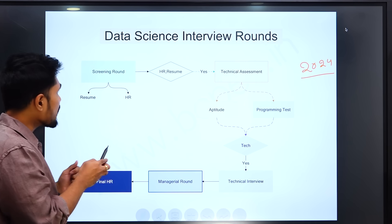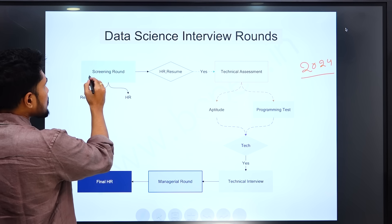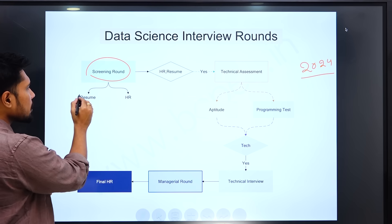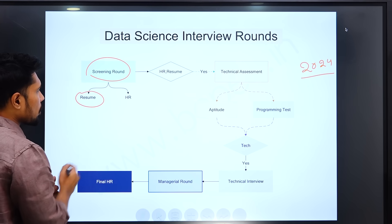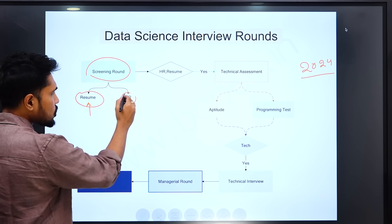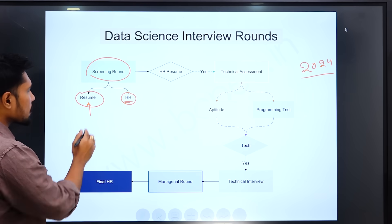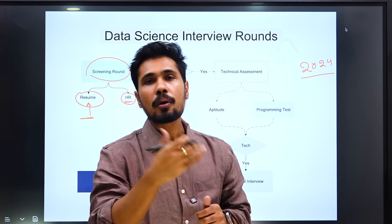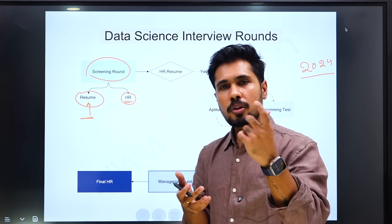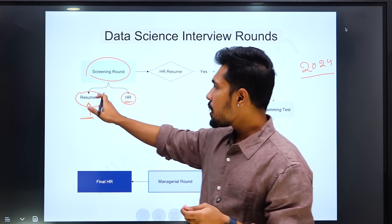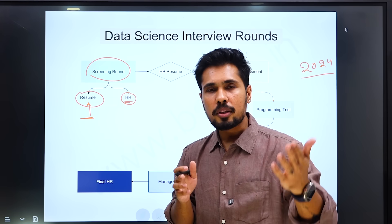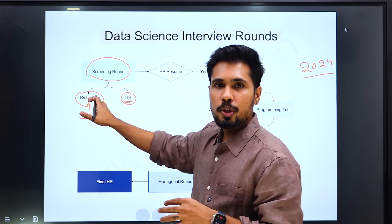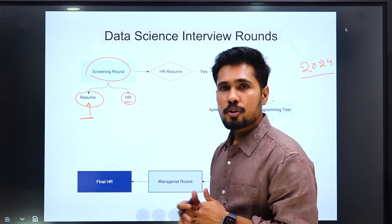Let's start with the very first round for data science learners, which is the screening round. In screening, there are two different levels. One is resume-level screening and another is HR-based screening. Resume-level screening means based on the keywords and points you placed in your resume — we call it ATS — your resume is going to be shortlisted on job portals like Naukri, Indeed, or Monster.